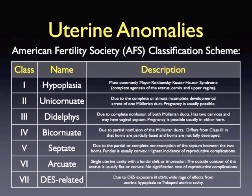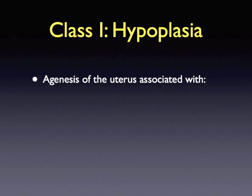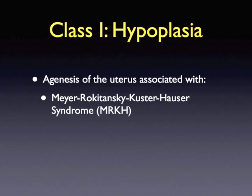The American Fertility Society classifies uterine anomalies in seven classes. Class 1 uterine anomalies are hypoplasia or uterine agenesis. Agenesis of the uterus is often associated with either the Meyer-Rokitansky-Küster-Hauser syndrome, which is a class 1 uterine anomaly and occurs when no vagina, cervix, or uterus exists, or testicular feminization, in which a blind pouch exists but no uterus or ovaries.